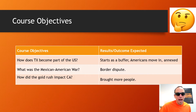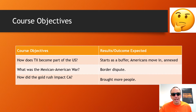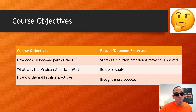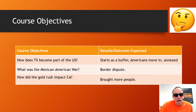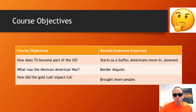Today we'll answer three key questions. How does Texas become part of the United States? It starts as a buffer, Americans move in, and then it's annexed — that's just a fancy word that means added. What was the Mexican-American War? It starts as a border dispute, but it's really about the outcome. And how did the Gold Rush impact California? It brings in more people and makes California incredibly valuable.